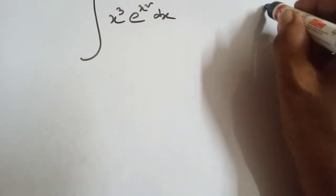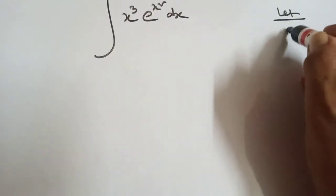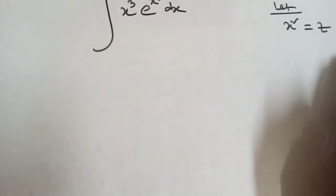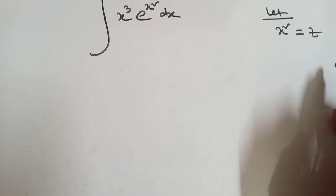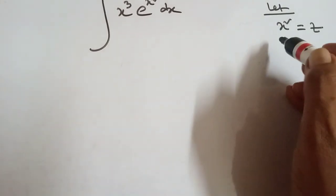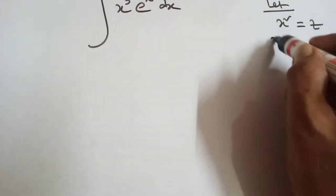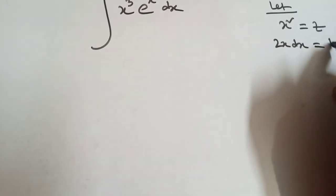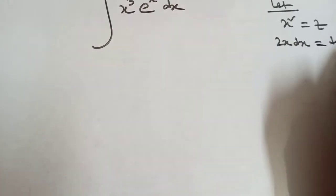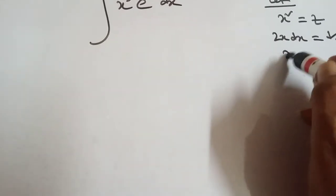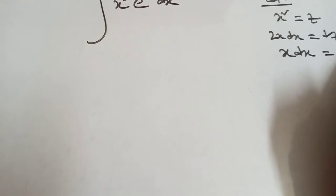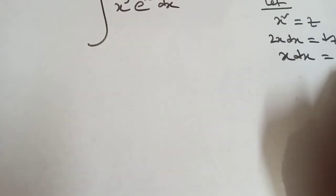At first, let x square equal to z. Differentiation of x square means 2x dx equal to dz, that means x dx equal to dz by 2.